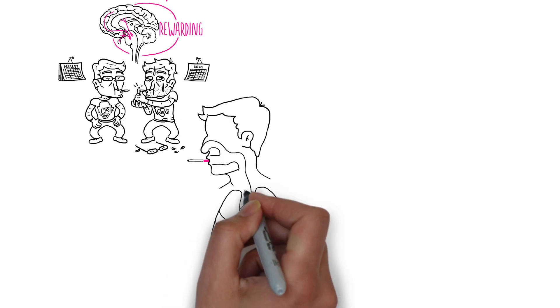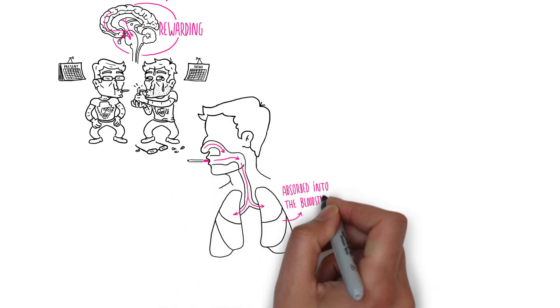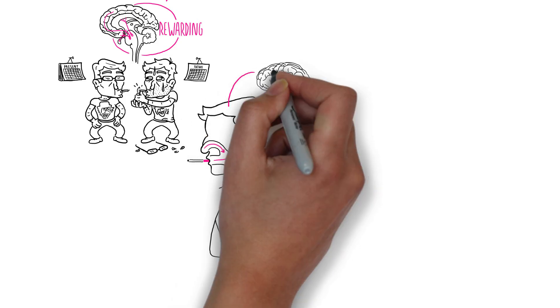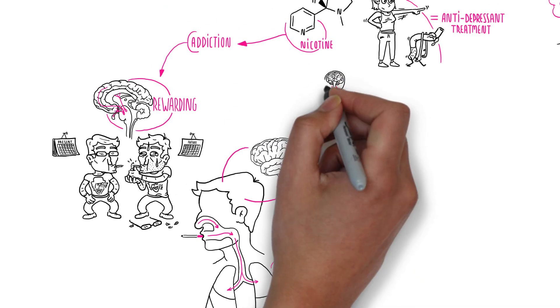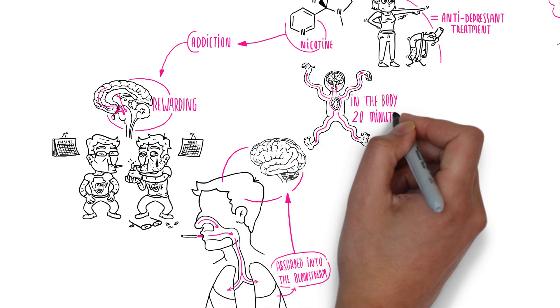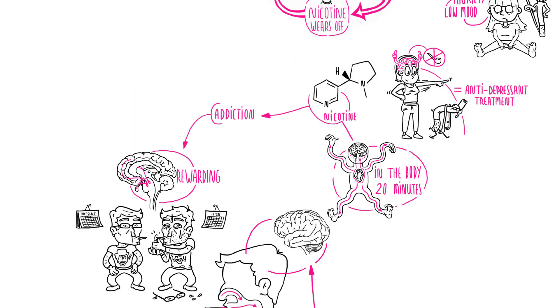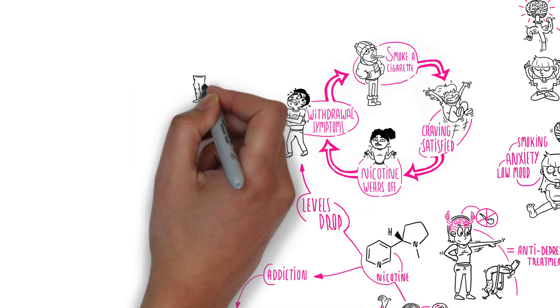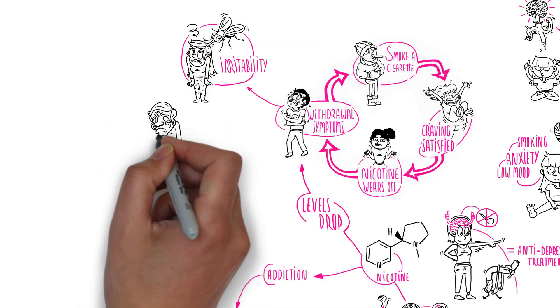Tobacco withdrawal sets in surprisingly soon after smoking a cigarette. While smoking, nicotine travels through the body to the brain. But nicotine only stays in the body for about 20 minutes. When smokers haven't had a cigarette for a while, nicotine levels drop and the craving for another one makes them feel irritable, depressed and anxious.